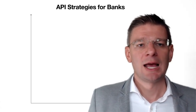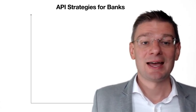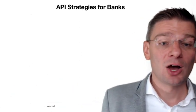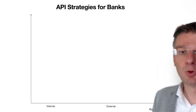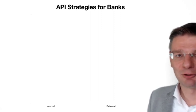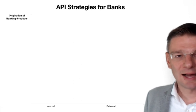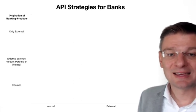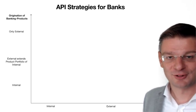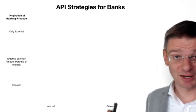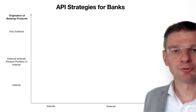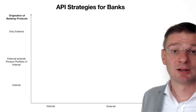I will put these options in a matrix with an X and a Y axis. On the X axis, you can see the ownership of the customer relationship — is it the bank, or is it someone outside the bank? And on the Y axis, you can see whether the banking product underneath is from the bank or from someone else. There are actually three options on the Y axis: inside, outside, or a mix of both, where you take some products from inside and some from the outside.